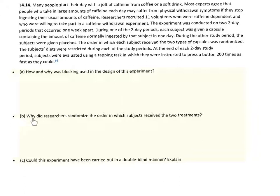Part B: Why did researchers randomize the order in which subjects received the two treatments? Randomization was done primarily to control for any possible influence of the order of treatments. We don't want subjects to know whether they have a placebo or caffeine — we want them to act normally. This controls for outside influences, such as their own mental state affecting how fast they can press the button 200 times.